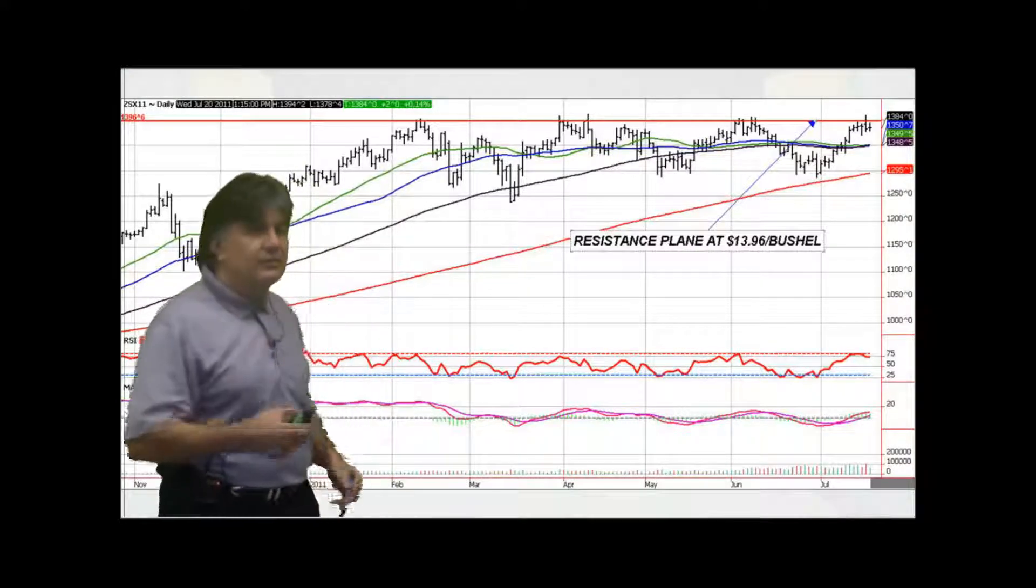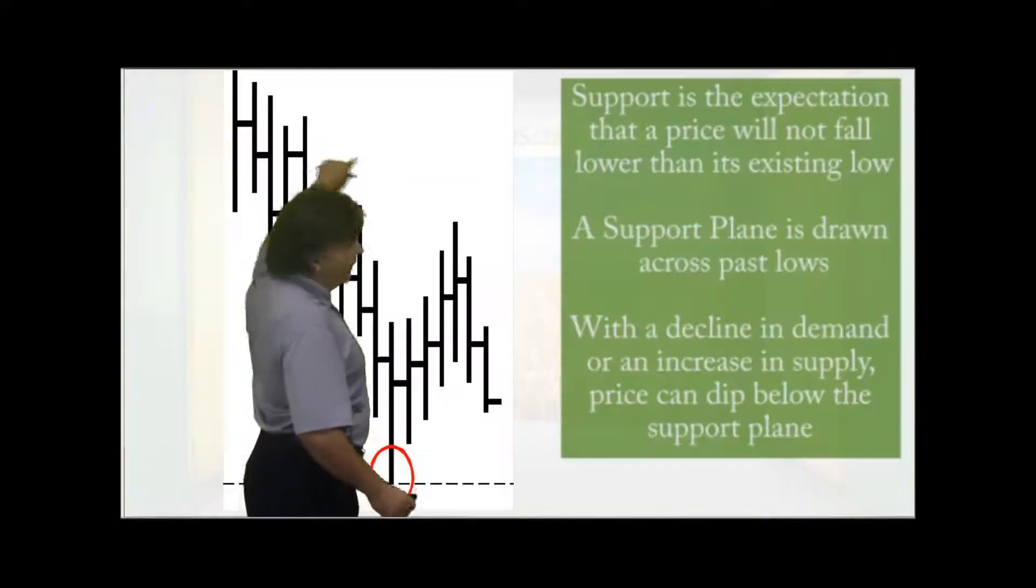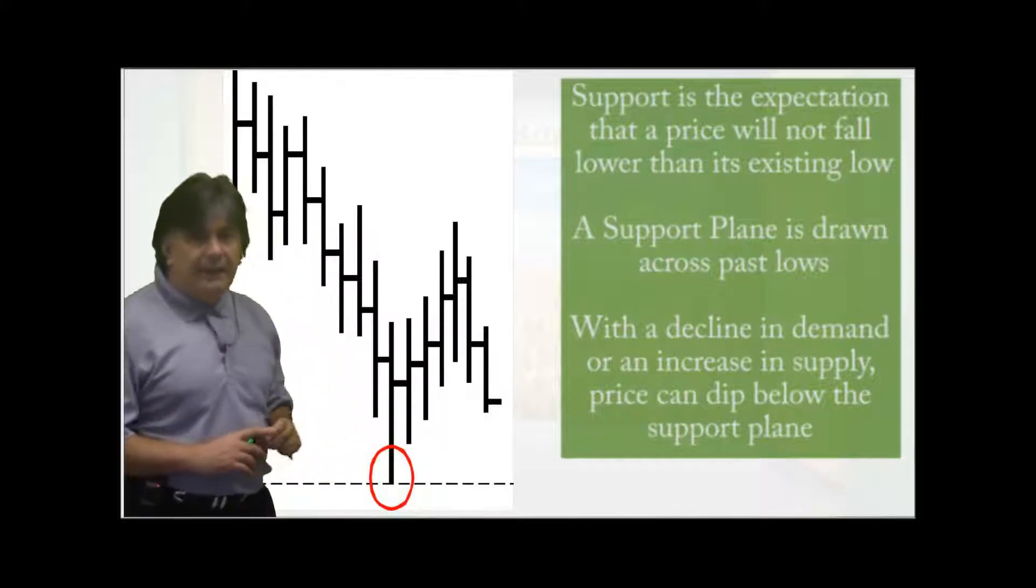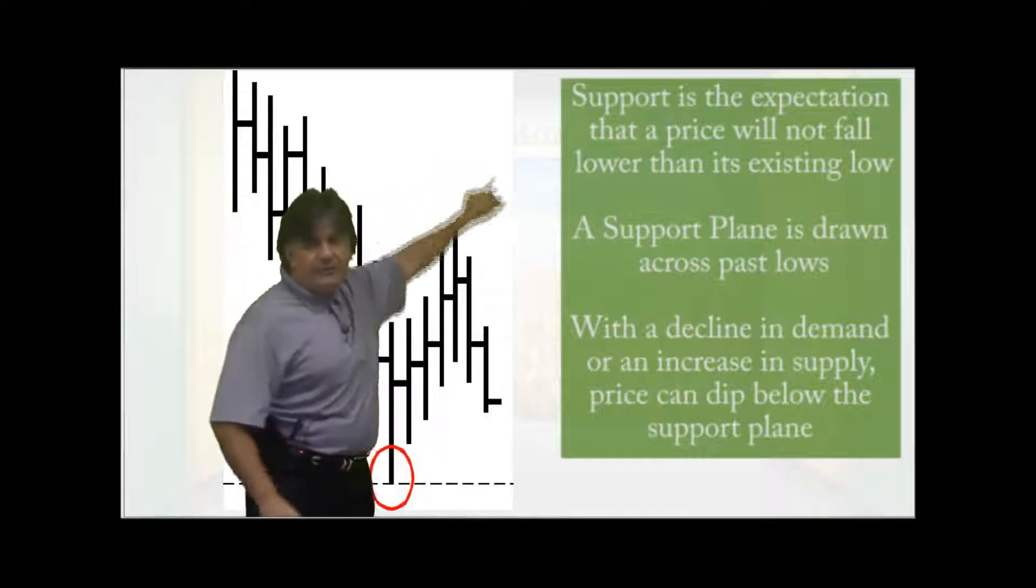Let's give you an example. This is the 2011 Soybean November daily futures chart, and you can see I can draw a line at the very top there around that $14 a bushel. And that's your resistance plane. The market's had a tough time breaking above that resistance plane.